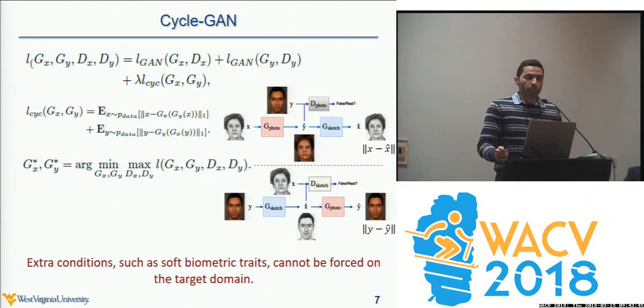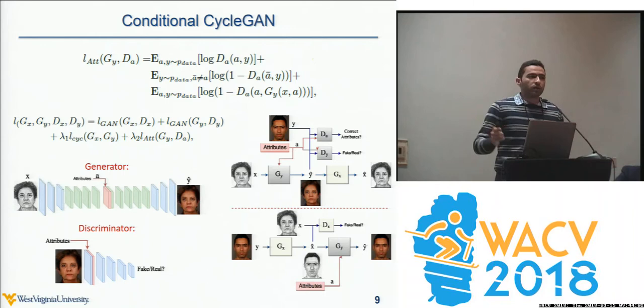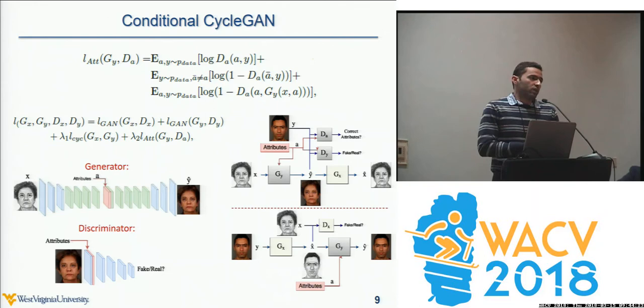To input attributes to the network: for the generator, since it is an autoencoder, we concatenate the attributes with the high-level features in the middle of the autoencoder. For the auxiliary discriminator, for each attribute we create a matrix of the same spatial size as the input, fill it with the attribute value, and concatenate it with the given photo before passing it to the discriminator.